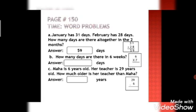Then look at the part C: Maha is six years old, her teacher is twenty-nine years old. How much older is her teacher than Maha? Maha ki age kya hai hai six years, Maha jo hai woh 6 saal ki hai aur us ke teacher ki age kya hai, twenty-nine.